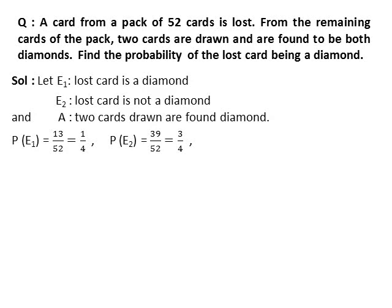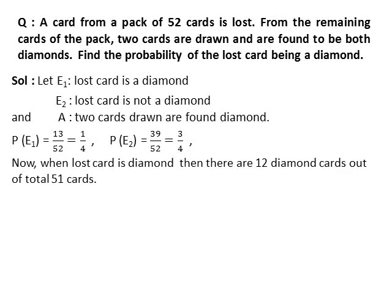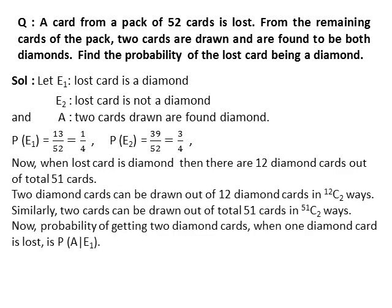When one card is lost, the number of remaining cards is 51. When the lost card is a diamond, there are 12 diamond cards out of 51 cards. Two diamond cards can be drawn from 12 in C(12,2) ways, and two cards from 51 in C(51,2) ways. Using the formula NCR = N! / ((N−R)! × R!), we solve C(12,2) and C(51,2). After simplification, P(A|E1) = 22/425.